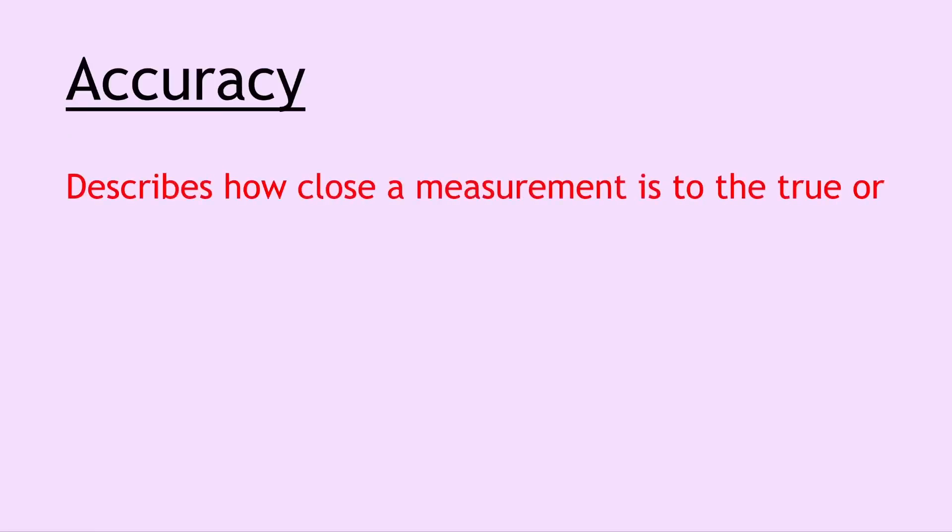Next we have the term accuracy, which describes how close a measurement is to the true or accepted value. For example, if you were measuring the boiling point of water and you measured it to be 100 degrees Celsius exactly, then you would say that your measurement was very accurate because it's bang on the true or accepted value. However, the further away you get from that accepted value of 100 degrees Celsius, the less accurate your measurement would be.